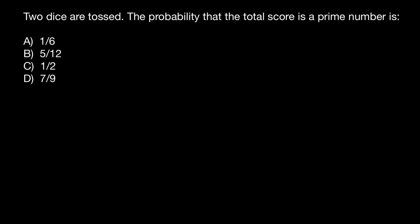And here's the problem. Two dice are tossed. The probability that the total score is a prime number is, and you have to choose one of these answers. Unlike, as usual, I show straightforward solution.